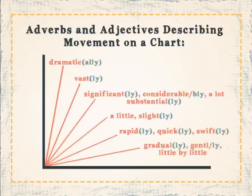Here is a chart of adverbs and adjectives describing movement. Some examples: dramatically, vastly, significantly, considerably, a lot, substantially, a little, slightly, rapidly, quickly, swiftly, gradually, gently, little by little.